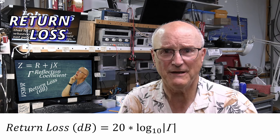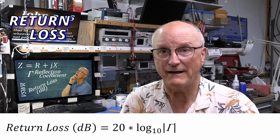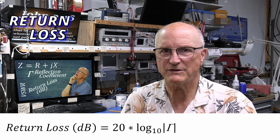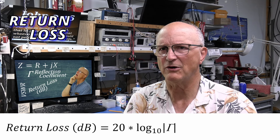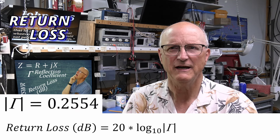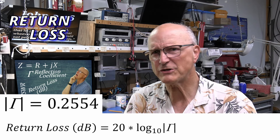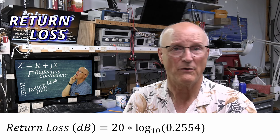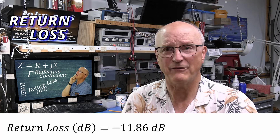This can also be seen through the eyes of the reflection coefficient. The equation is very simple once you have calculated the magnitude of the reflection coefficient: return loss in dB equals 20 times log base 10 of the magnitude of the reflection coefficient. Using our situation — load impedance of 68 plus J25 and a magnitude of the reflection coefficient of 0.2554 — return loss equals 20 times log base 10 of 0.2554, which gives us minus 11.86 dB.